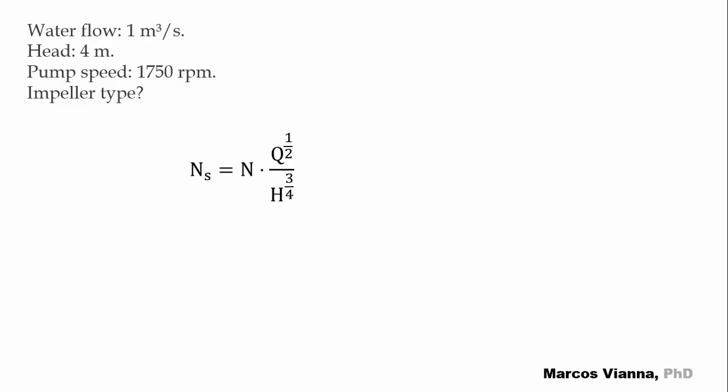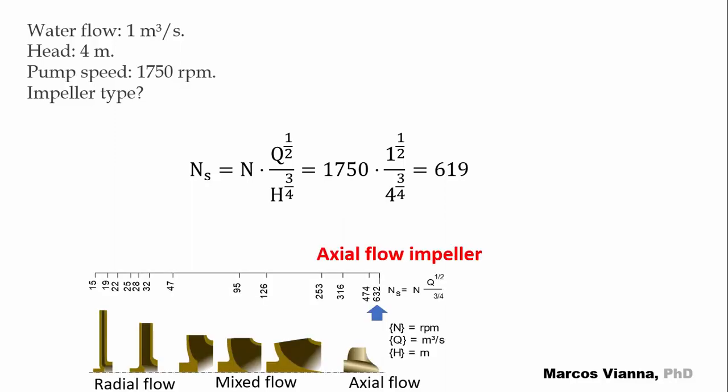Now another one. Consider the case in which the water flow is 1 cubic meter per second, the head is 4 meters, and the pump speed is 1750 RPM. What will be the impeller type? Here is the specific speed formula. We substitute the values and find 619. It's an axial flow impeller. This will be the case in many large irrigation facilities.